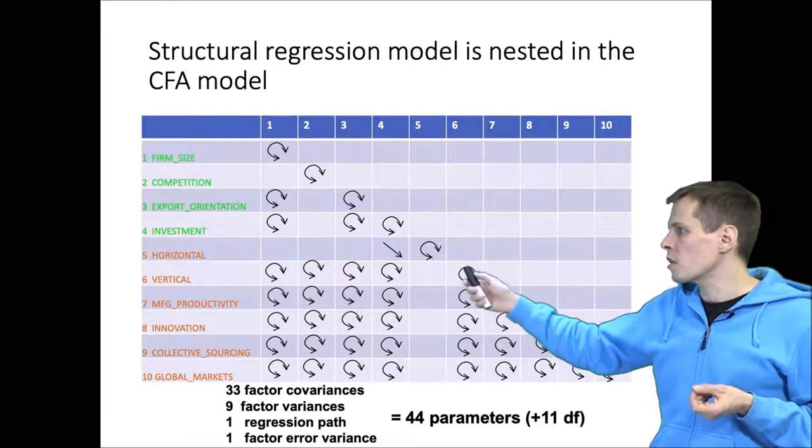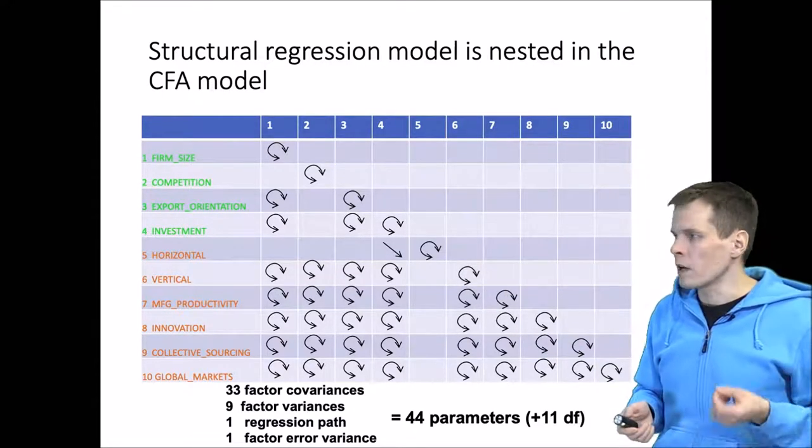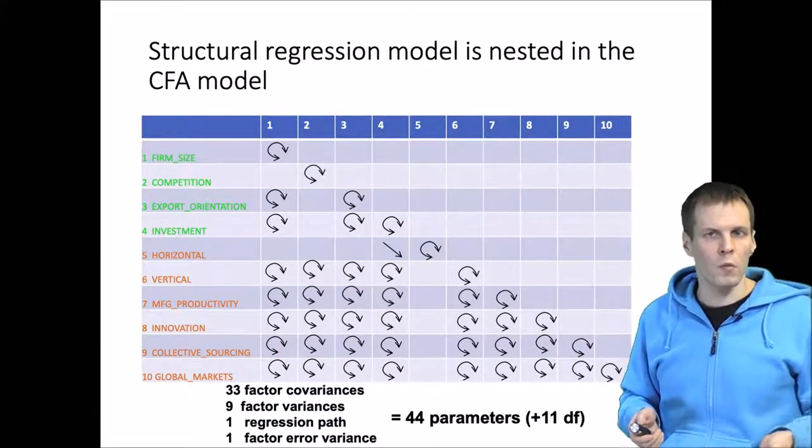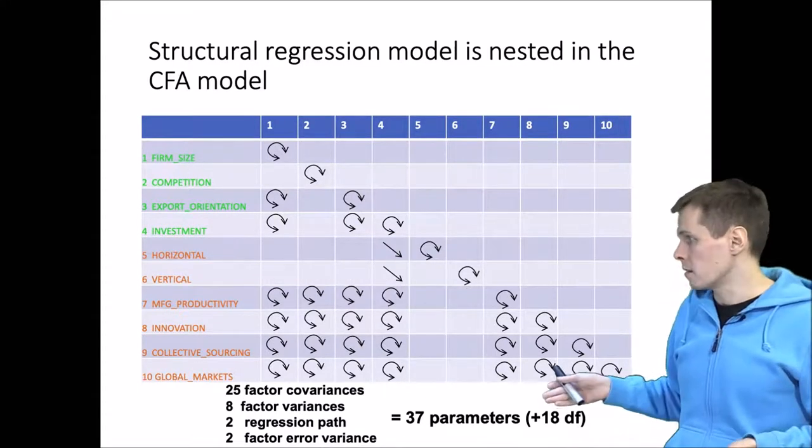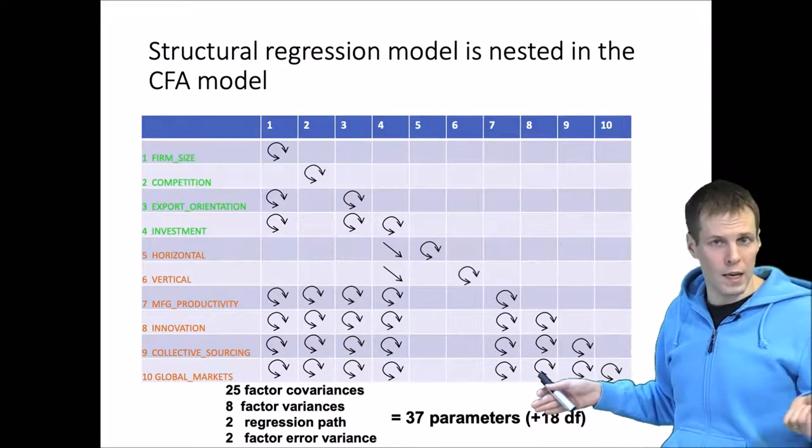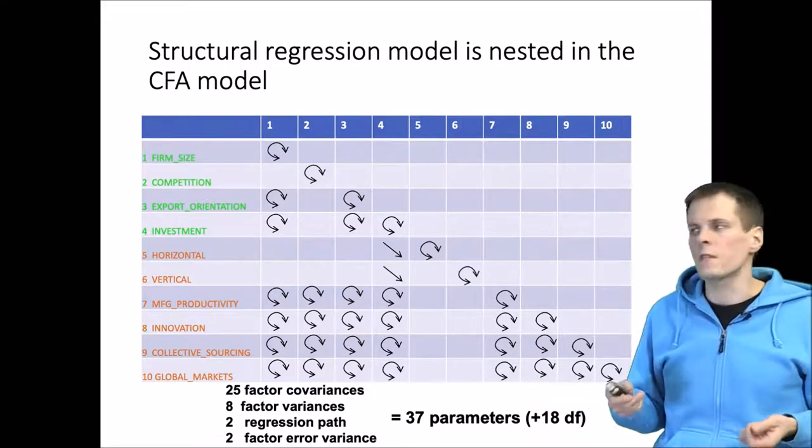Then we proceed to vertical. We take away all correlations involving vertical, which is eight correlations, and we add one regression path, so we gain seven degrees of freedom. We're now at plus 18 and we do this for all the variables.